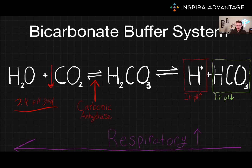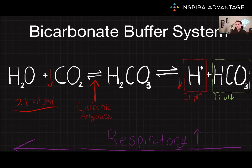Through Le Chatelier's principle, this will decrease the amount of hydrogen in the blood. We know that pH is just a measure of hydrogen, so if we remove that hydrogen, we're going to have a higher pH, or less acidic blood. So how does the body use this system in a practical way? When the respiratory rate increases, more carbon dioxide is exhaled, so we're going to see the amount of CO2 in the system decrease. Through Le Chatelier's principle, this will decrease the amount of H+, and will therefore increase blood pH, because pH is just the literal measurement of the amount of hydrogen in the blood.